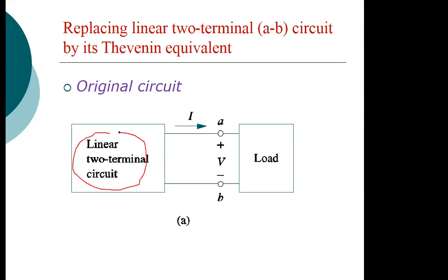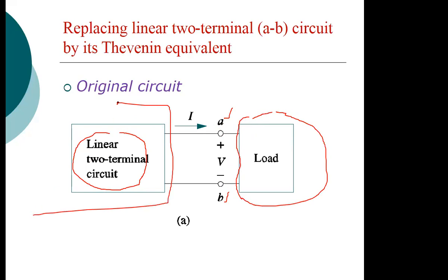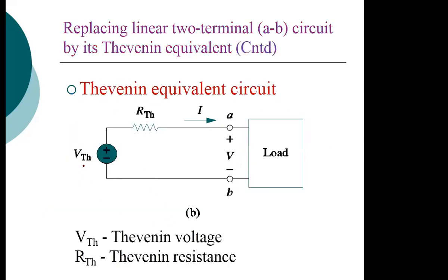We have a linear two-terminal circuit with terminals A and B, and then the load. What we are saying is we can vary this load, but we have a fixed equivalent circuit to the left. So the components of the circuit will be V-Thevenin (or E-Thevenin), which is the Thevenin equivalent voltage, and R-Thevenin, which is the Thevenin equivalent resistance of the whole network. Any two-terminal linear bilateral network can be replaced by an equivalent voltage source V-Thevenin (or E-Thevenin, depending on the textbook) and an equivalent resistance R-Thevenin.